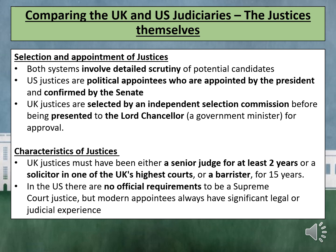Both systems involve detailed scrutiny of potential candidates. However, there is a fundamental difference in the way each justice is selected. US justices are political appointees appointed by the President and confirmed by the Senate. UK justices are selected by an independent selection commission before being presented to the Lord Chancellor for approval. The US appointment process is highly politicised, whereas the UK equivalent is independent and receives far less media attention. In fact, the position of a UK Supreme Court justice is advertised and candidates can apply as they would for any other job.